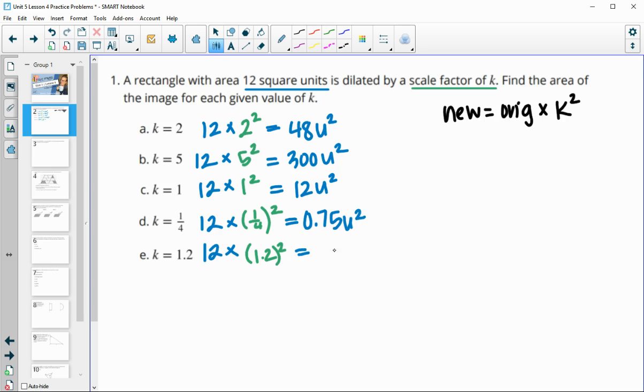And then this final one, 12 times 1.2 squared, is 17.28 units squared.